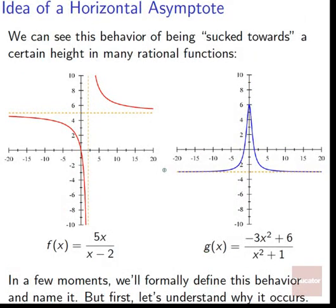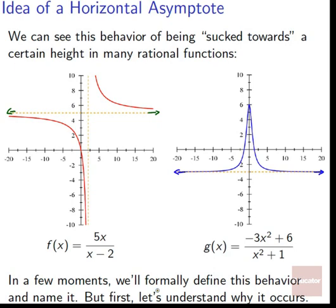We can see this behavior — being sucked towards a certain height — in many rational functions. In 5x divided by x minus 2, we see a horizontal asymptote at 5; it gets pulled towards a height of 5 in the long run. With g of x equals negative 3x squared plus 6 over x squared plus 1, it gets pulled towards a height of positive 3, and quite quickly. Just like with vertical asymptotes where the function never quite touches the asymptote, with the horizontal asymptote, it will not quite actually get there. Let's understand why this occurs.